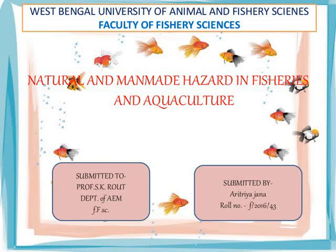Engineering hazards occur when structures used by people fail or the materials used in their construction prove to be hazardous. The history of construction has many examples of hazards associated with structures, including bridge failures such as the Tay Bridge disaster caused by under-design, the Silver Bridge collapse caused by corrosion attack, and the original Tacoma Narrows Bridge collapse caused by aerodynamic flutter of the deck.